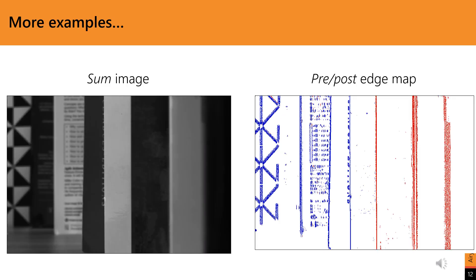This scene is a stack of books at decreasing distances from left to right. The scene has mostly vertical edges. In the pre-post edge map to the right, we can see that the edges to the left are in the post-focus region and those to the right are in pre-focus. Further, the focus is around here.